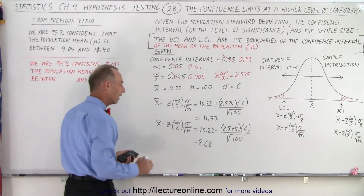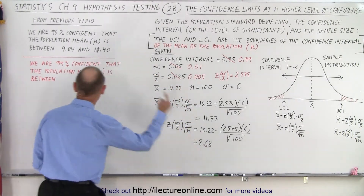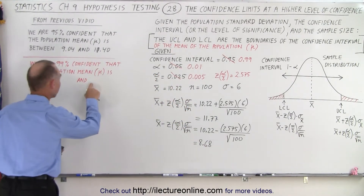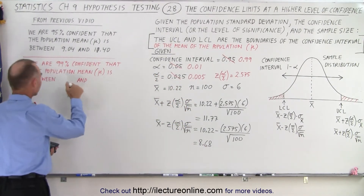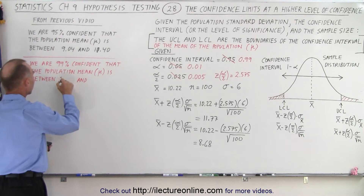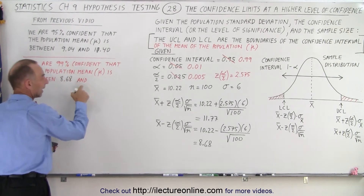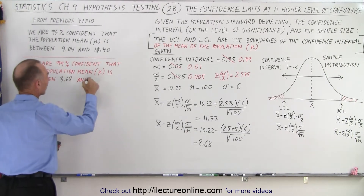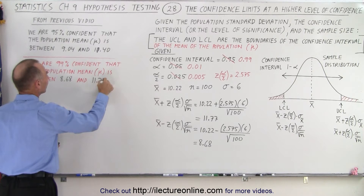We subtract that from 10.22 and we get 8.675, which we round to 8.68. So the interval is between 8.68 and 11.77.